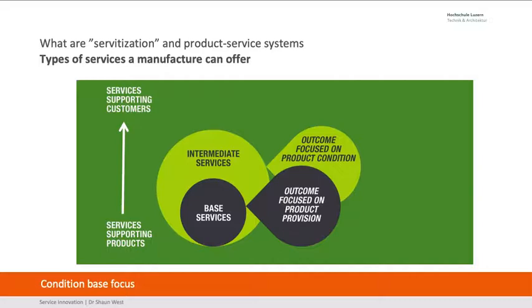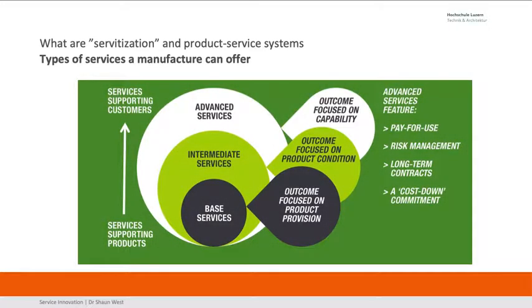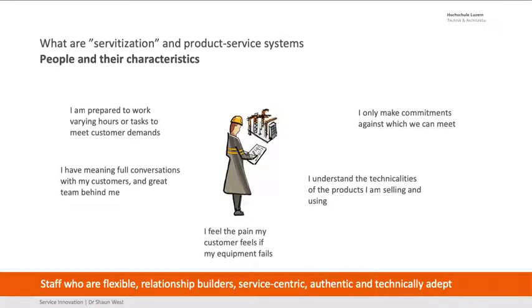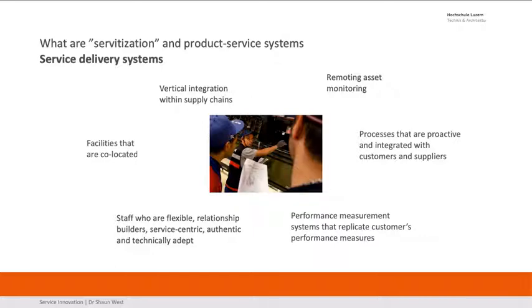Intermediate services are focused on the product condition — how do we keep the equipment in good condition? Advanced services focus on the outcome: paper use, long-term contracts, a cost-out commitment — we're changing the structure completely. People: the focus is really on people. I need the right people to deliver the services — people who are relationship-based but understand the technology, service-centric and flexible. That's not as easy as it seems. We need good service delivery systems — again, not easy to do. It's a complex integration of practices and technologies, really difficult to get right. Sometimes you just have to try things and prototype to see how it works.